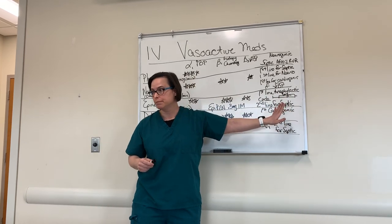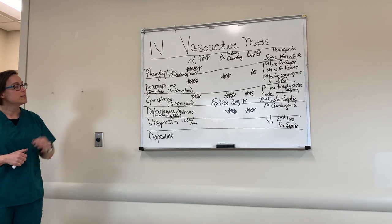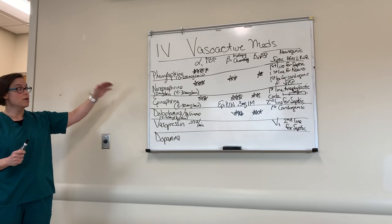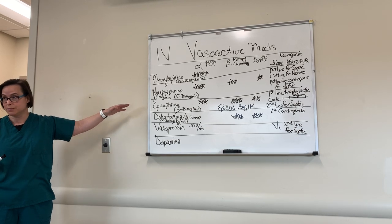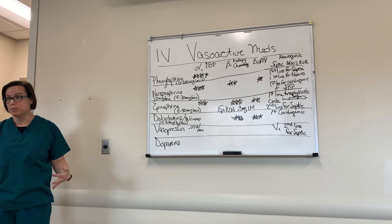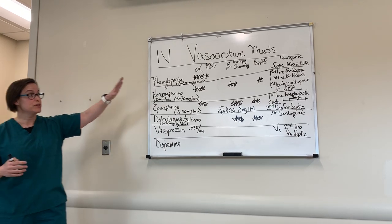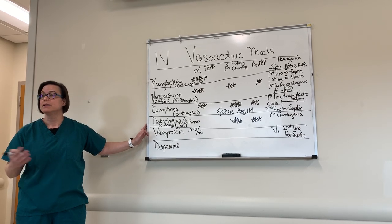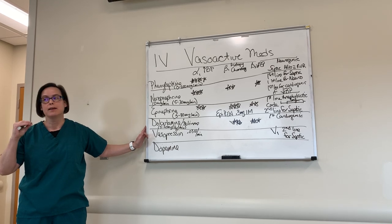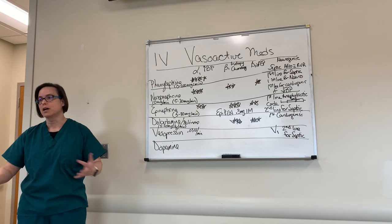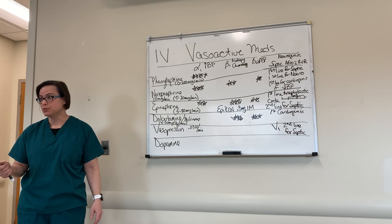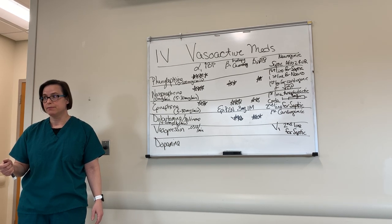Key takeaways: you can give vasoactive medications through a peripheral IV if you need to. Norepinephrine is a great starting point for almost all shock types. For COVID-19 patients specifically, consider that you may need to treat septic shock first, then come back and treat cardiogenic shock. Get your arterial line as soon as possible for close blood pressure monitoring, and get your central line as soon as you can.